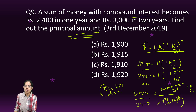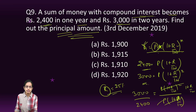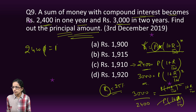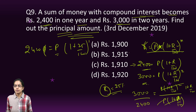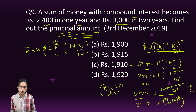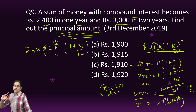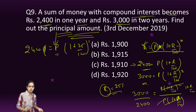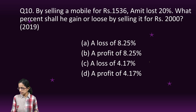So the sum becomes 2400 in one year and 3000 in two years — find the principal P. Once the rate r is found (say 25%), substitute into 2400 = P(1 + 25/100)^1 and solve for P. An important point: for compound interest problems, sometimes you need to divide the equations rather than add or subtract to get the right values.